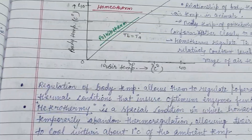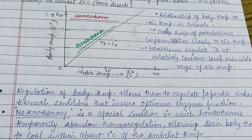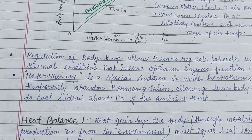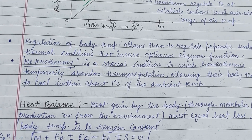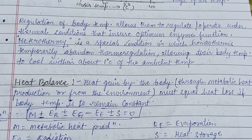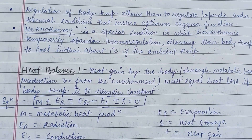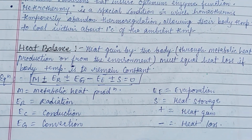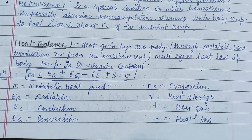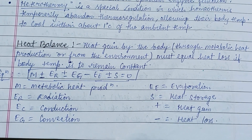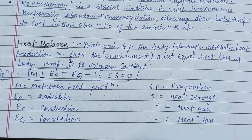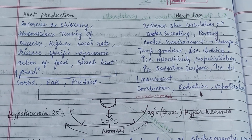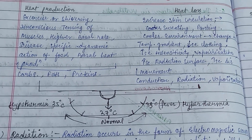The graph represents the homeotherms and the poikilotherms in relation between body temperature and air temperature in animals. Regulation of body temperature allows animals to operate under thermal conditions that ensure optimum enzyme function. Heat balance means that heat gained by the body through metabolic heat production or from the environment must equal heat loss if body temperature is to remain constant.